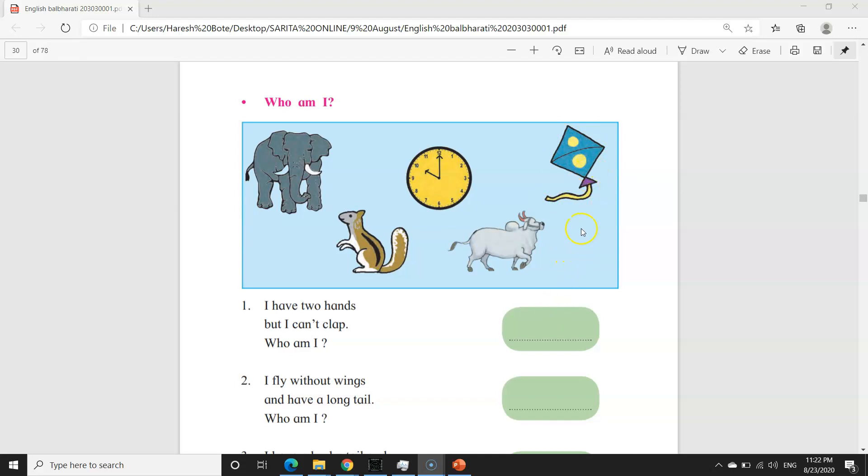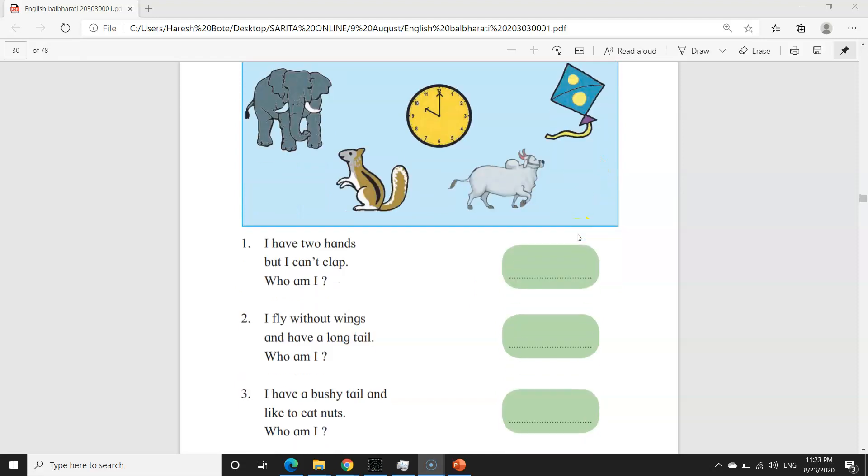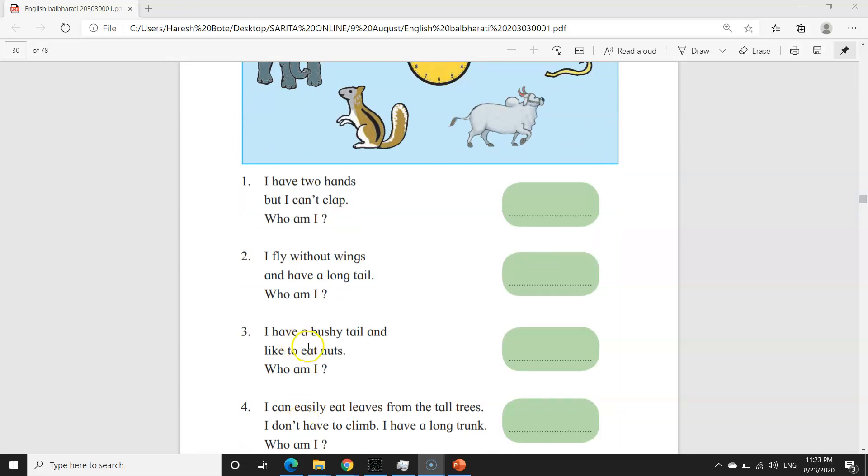Third. I have a bushy tail and like to eat nuts. Who am I? Bushy manzhe zhup kajda. I like to eat nuts, nuts manzhe daanye. Mala zhup kajda shepti aahe aani mala daanye khayla aavaltat. Kone aahe mi? The answer is squirrel, manzhe kharo.